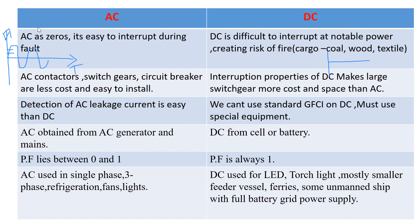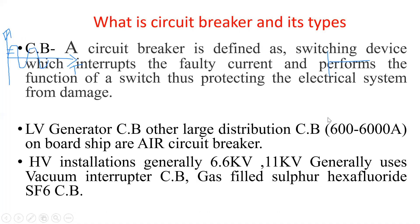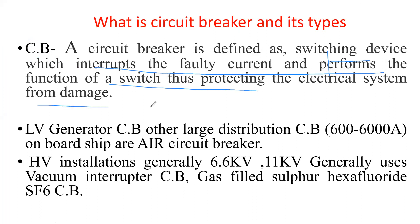Moving to the next slide: what is a circuit breaker and what are its types? A circuit breaker is a protecting and switching device which interrupts faulty current and protects electrical equipment from damage. It can be reused. It is mostly connected with the bus tie bar and the generator, and can be easily opened and closed under fault conditions.